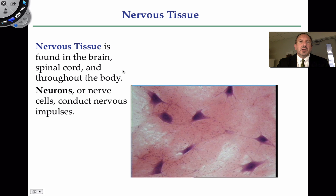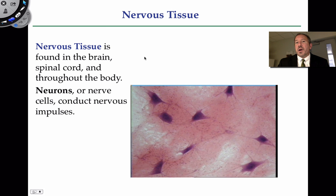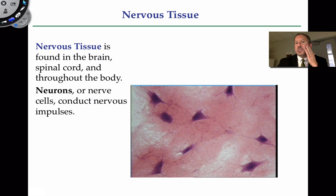So where do you find nervous tissue? Well, clearly it's widespread throughout the body. You know that there's a dense amount of nervous tissue in the brain, and that connects to the central nervous system down the spinal cord. But really, nerves are found throughout the body, and they're even in the skin, and they help us to feel things.